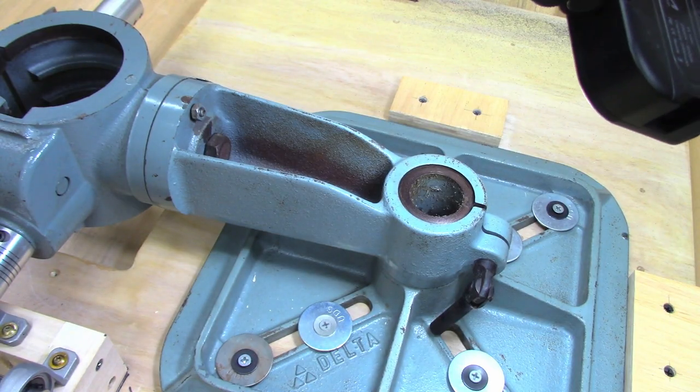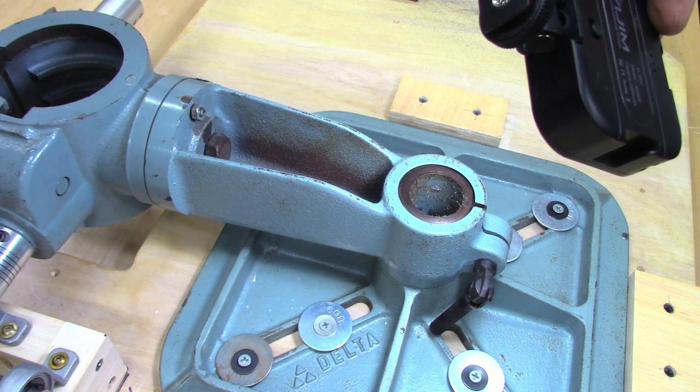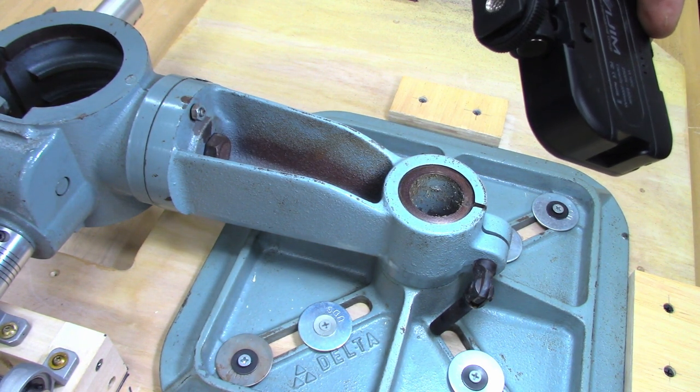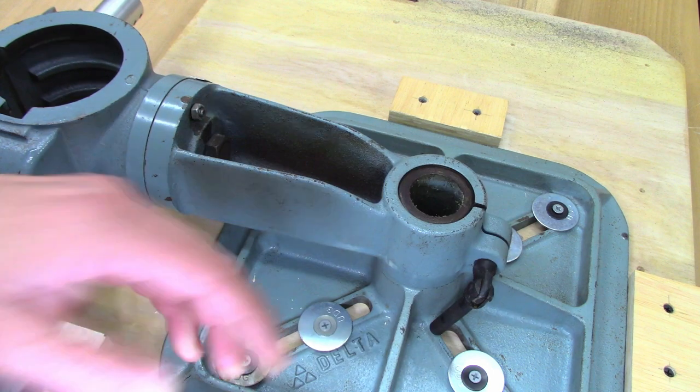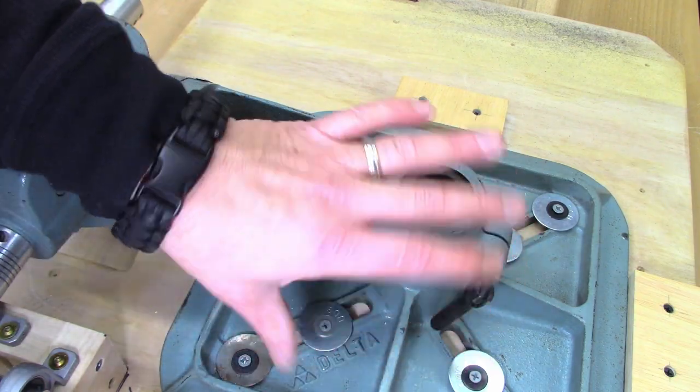If your drill press has the ability to pivot, make sure you get a wrench on this bolt right here and make it really tight. Otherwise, your gears are going to lose mesh with each other and it won't work. And also make sure this is tight right here. This allows your table to twist.